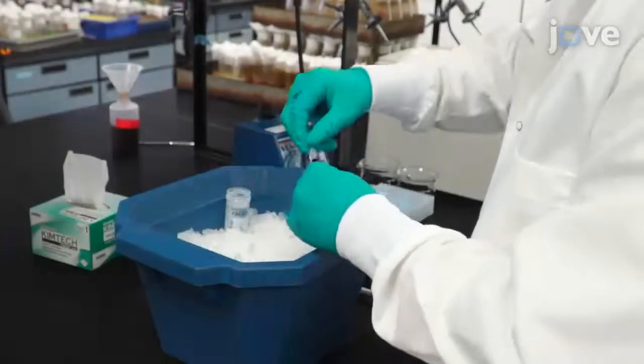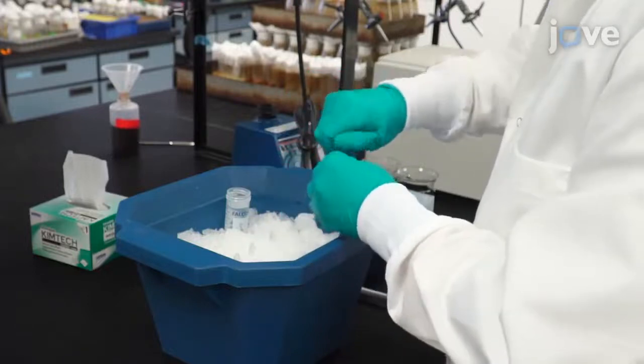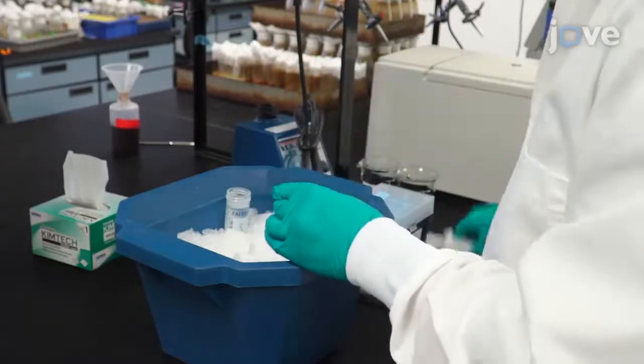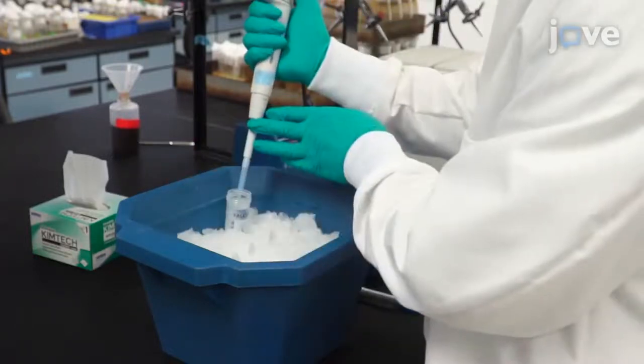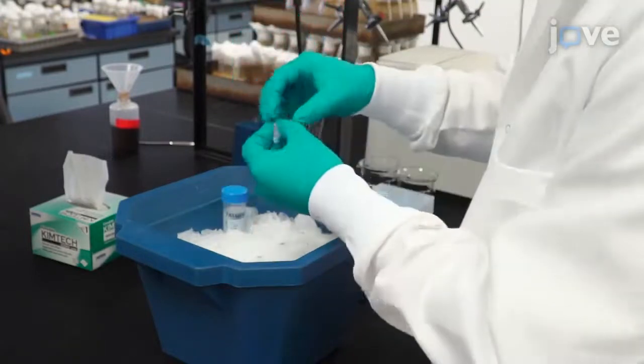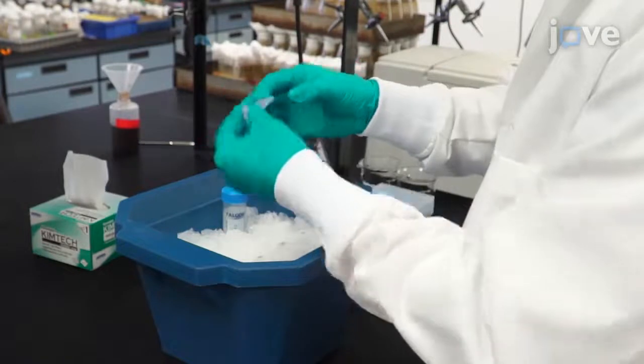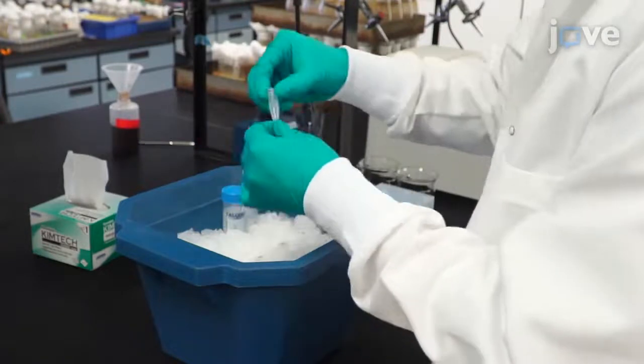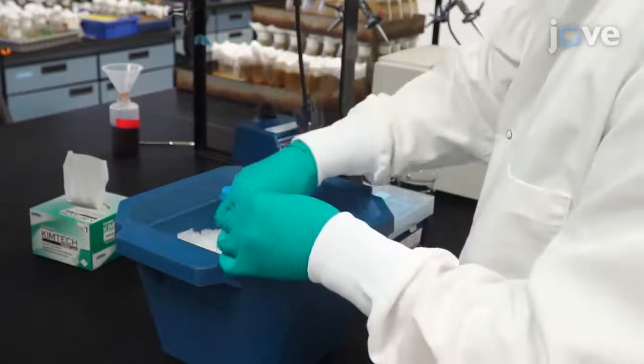To begin the protocol, add one milliliter of ice-cold 0.9% sodium chloride into a 1.5-milliliter tube containing previously prepared larvae. Close the lid, vertically flip the tube to thoroughly wash the larvae, and place the tube on ice for 30 seconds.